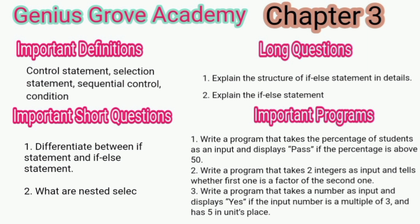Question 2: Write a program that takes two integers as input and tells whether first one is a factor of the second one. Question 3: Write a program that takes a number as input and displays 'Yes' if the input number is a multiple of 3 and has 5 in units place.